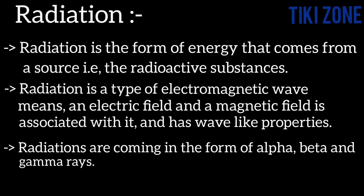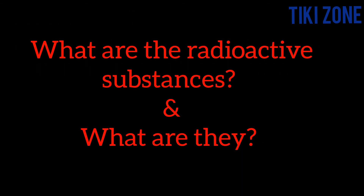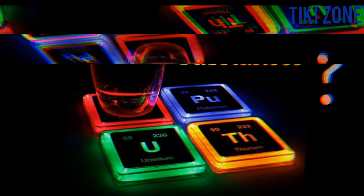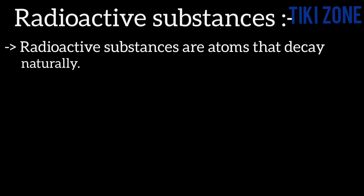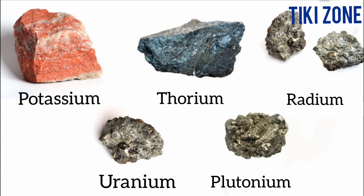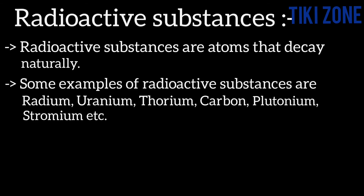Then we have to know what radioactive substances are and what are examples of radioactive substances. Radioactive substances are atoms that decay naturally. Some examples of radioactive substances are radium, uranium, thorium, carbonium, plutonium, etc.